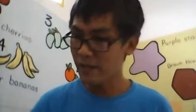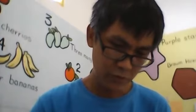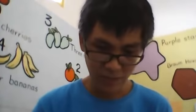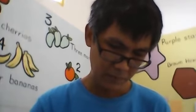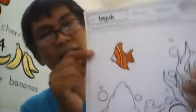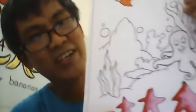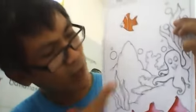Now Mr. Teguh will color the fish. Mr. Teguh uses orange to color the fish. You may choose another color. Finish for the fish and the starfish — now we will color the other pictures.